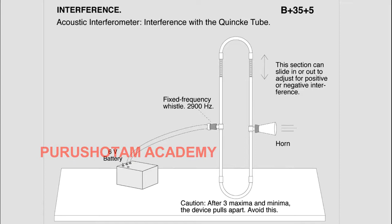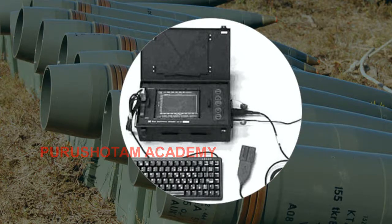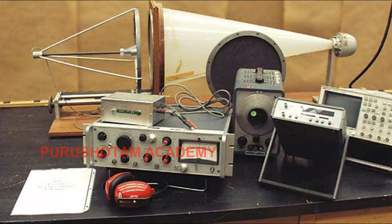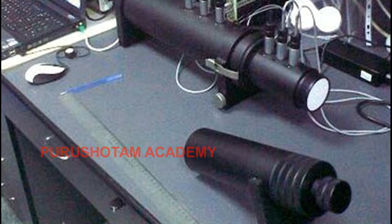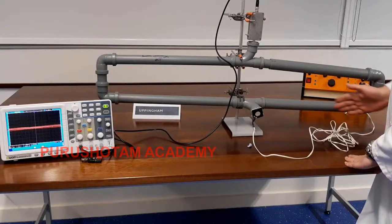The strength of the standing wave pattern set up between the source and the reflector, as the distance between source and reflector is varied, or as the frequency is varied, indicates the absorption by the medium. The velocity at which the waves travel may be determined from the distance between the peaks in the pattern of standing waves.